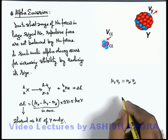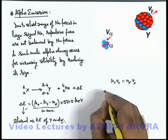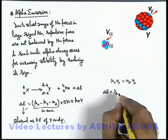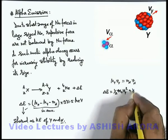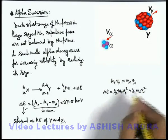As well as the energy which is released here, which is delta E, is taken up by both of these. So this delta E must be half M_Y V_Y squared plus half M_alpha V_alpha squared.